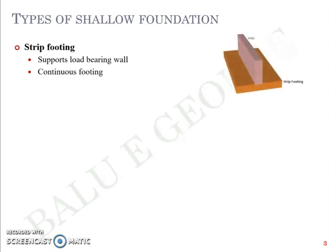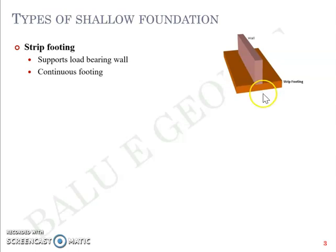Most of our houses which are limited to two stories would probably have this as the foundation. When you visit a site where construction of a two-story building is taking place, they excavate the soil to about 1.5 meter depth, place a layer of PCC on the level ground, then construct a footing over it. In some cases where strong soil exists, they may go for random rubble masonry as well. These are called strip footing because they run as a strip below the wall of your house.